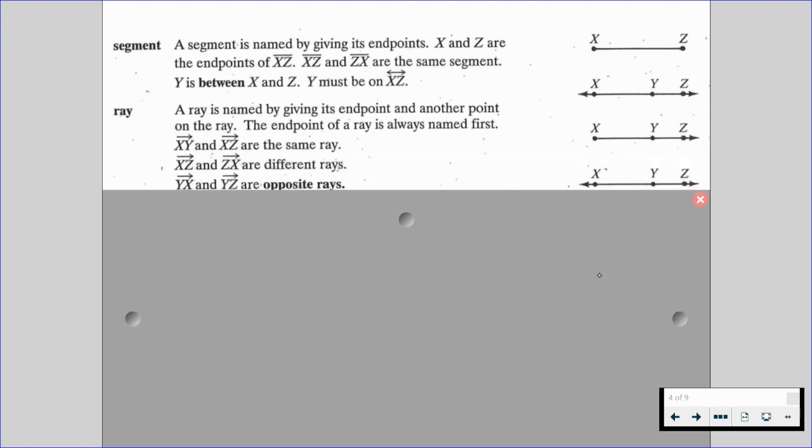We also have what is called a ray. A ray is named by giving its endpoint and another point on the ray. The endpoint of a ray is always named first. So ray XY and ray XZ, those are the same rays. It's the same endpoint of X and Y and Z are two points that go on the way our ray is facing.